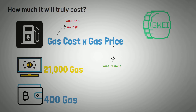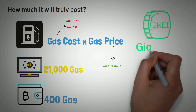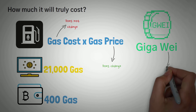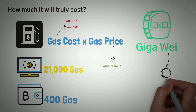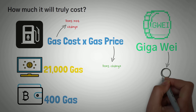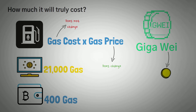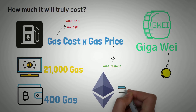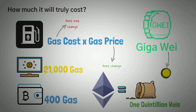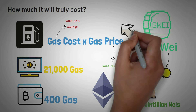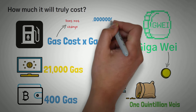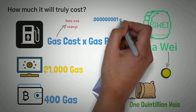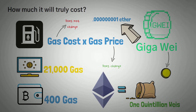So what is GWEI? GWEI stands for Gigawei. A wei is like one penny to a dollar, or one satoshi to a Bitcoin — except it's for Ethereum. There are one quintillion weis in one Ethereum. And because that is a ridiculously small amount, we instead use Gigawei, which is 0.000000001 Ether.